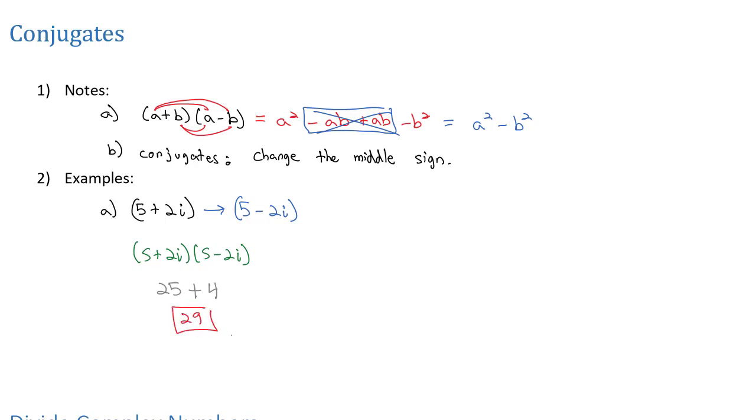The nice part about conjugates is they multiply to a real number. It's no longer an imaginary number. Let's try one more example. Let's try one with radicals.